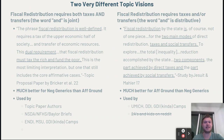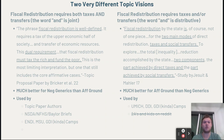The first version of the topic says that fiscal redistribution requires both a tax and a transfer — the word 'and' is a joint phrase. Here is from the topic proposal paper: 'The phrase fiscal redistribution is well defined. It requires a tax of the upper economic half of society and transfer of economic resources.' This dual requirement — that fiscal redistribution must tax the rich and fund the poor — is the most limiting interpretation, but one that still includes core affirmative cases. This version is probably good for negative generics and less good for affirmative ground and creativity.